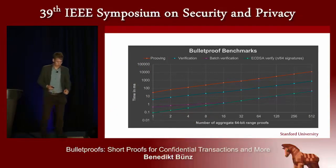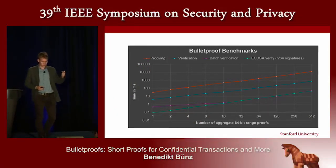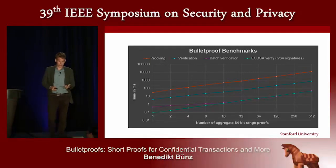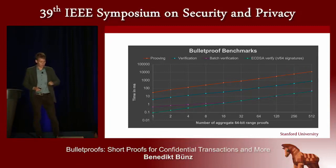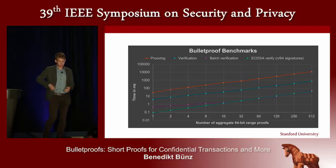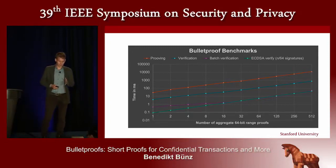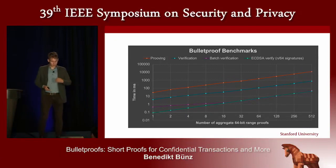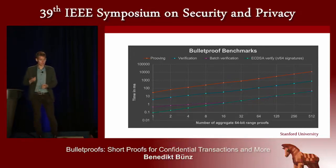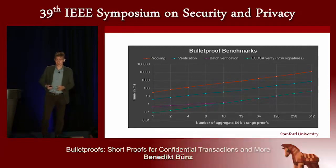On a log-log scale plot of proof time, verification time, and batch verification time, benchmarked against verifying N ECDSA signatures — which is what you currently do in a Bitcoin transaction — with the number of aggregated range proofs on the x-axis: starting from about 16 range proofs batched into one single proof, verifying 16 proofs is about as expensive as verifying 16 ECDSA signatures. So such a system isn't actually that much more expensive than the old Bitcoin system.